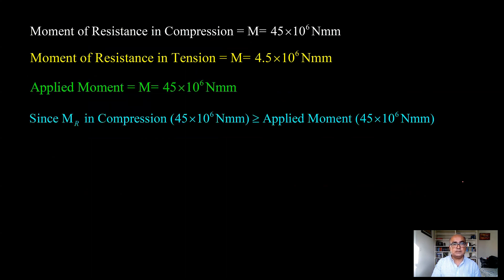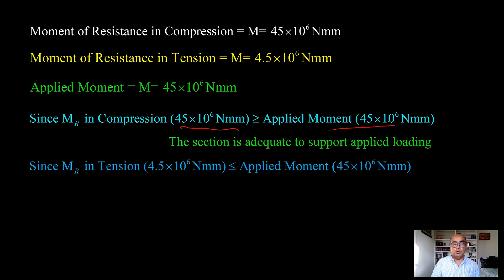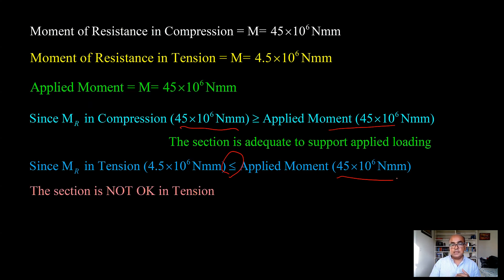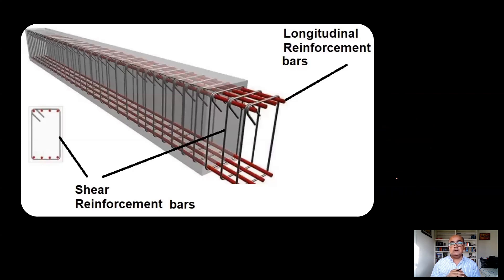The applied moment is 45 kN·m. Since the moment of resistance in compression equals the applied moment, the section is fine in compression. However, the moment of resistance in tension, 4.5 kN·m, is far less than the applied moment of 45 kN·m, so the section is not adequate in tension. In that case, we need a steel reinforcing bar to resist the tensile stress. That is why in reinforced concrete beams you see bottom bars — they resist the tension.